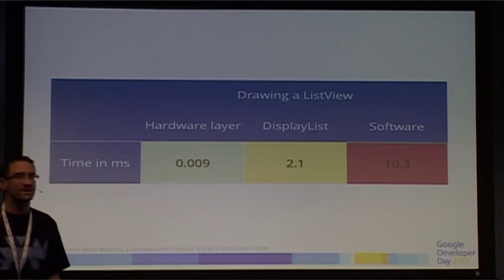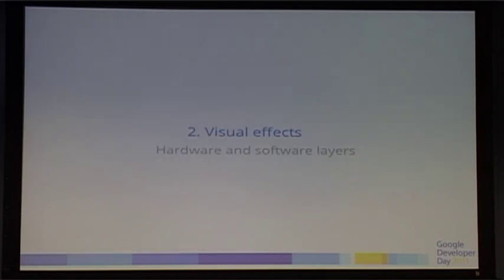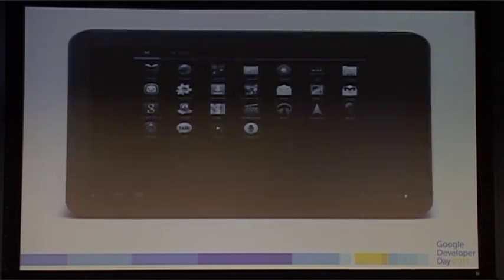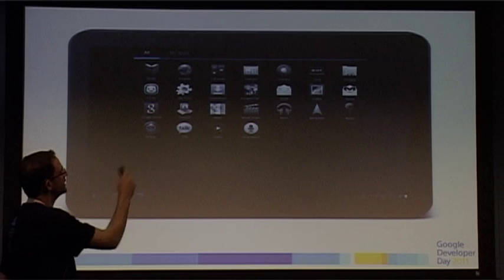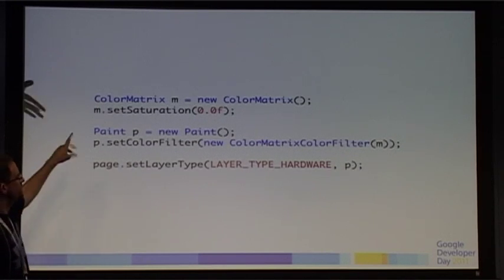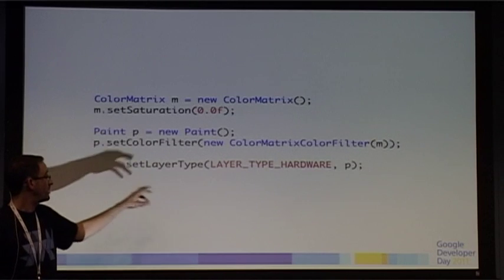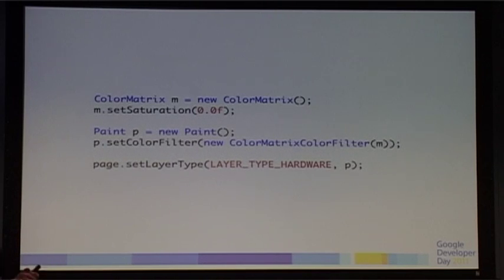With hardware and software layers you can also apply effects. The launcher screen in Honeycomb is rendered to a hardware layer, and with that you can apply a paint — for example, desaturating the layer before putting it to the screen. You don't have to apply a filter to individual items: just set saturation to 0, set layer type to hardware on your page, and apply the paint to the entire layer. You can use existing paint and animation functions to alter your entire layer at a time without worrying about individual views. Maximum compatibility is through software layers — there are different amounts of GPU memory on different devices, and you may run into issues rendering massive bitmaps to hardware layers.